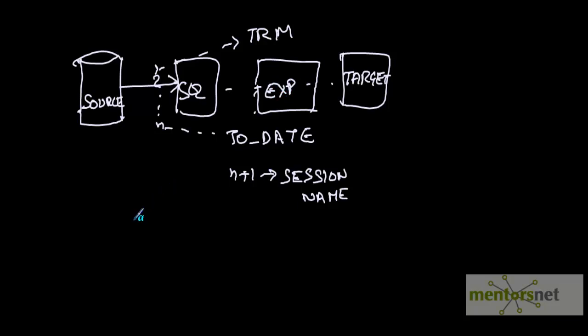Expression transformation is basically a passive transformation. It will not change the number of records going through it, but it can enrich the data flowing through it — it can cleanse, standardize, and do a lot of variety of things on the data. Let's see an example of expression transformation.